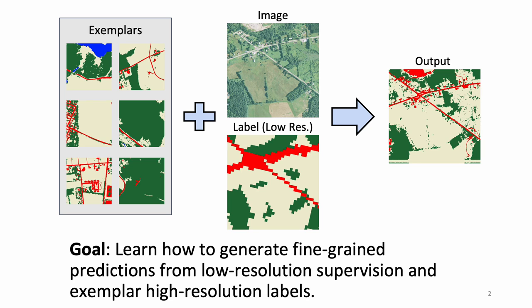Overhead imagery is diverse and comes in many formats. This diversity leads to unique challenges when applying semantic segmentation algorithms. For example, how to handle resolution differences between input imagery and target labels, a problem we refer to as resolution mismatch. In this work, we explore how to generate fine-grained predictions when only low-resolution labels are available for direct supervision. Our key insight is that exemplar high-resolution labels are often available, and that a method should be able to take advantage of this auxiliary data during model training without the corresponding imagery to aid in producing fine-grained output.